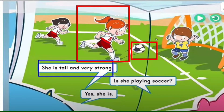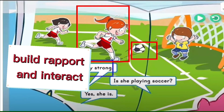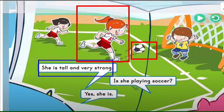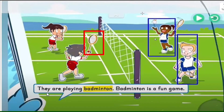Use TPR — don't just read. Interact with the student. For example: 'She is very strong — show your strongest pose! Very strong and tall!' Make sure to point out who you are referring to in the picture. Don't forget the soccer ball. For badminton, you can repeat the word three times — 'badminton, badminton, badminton' — and let the student repeat after you.